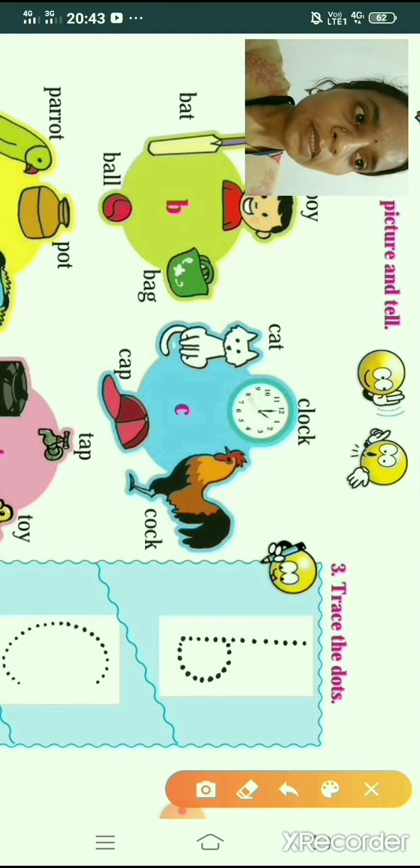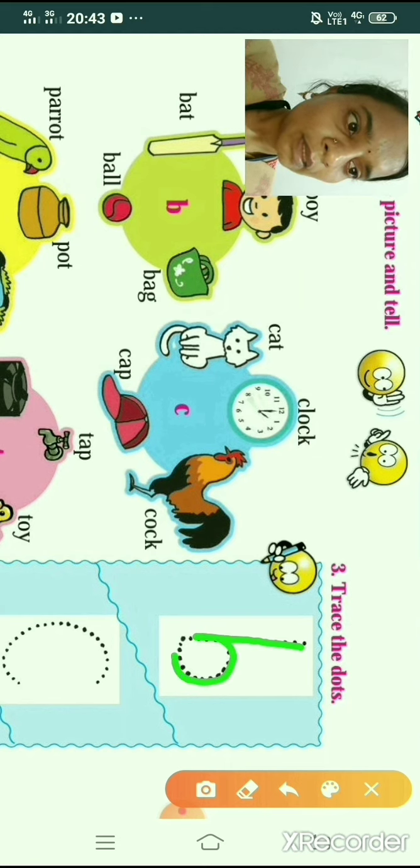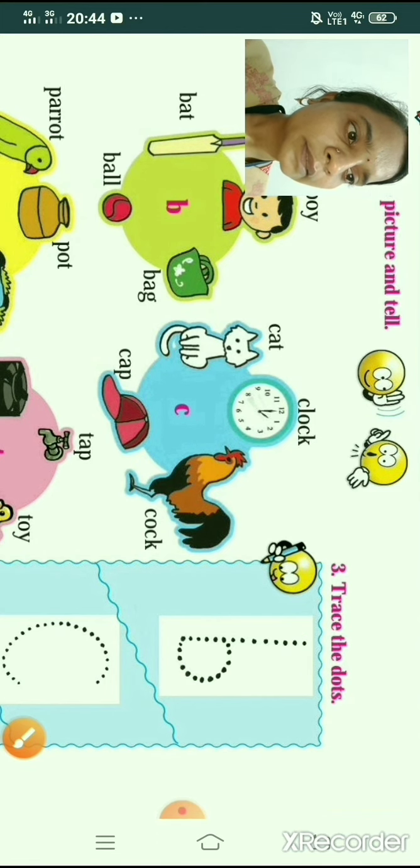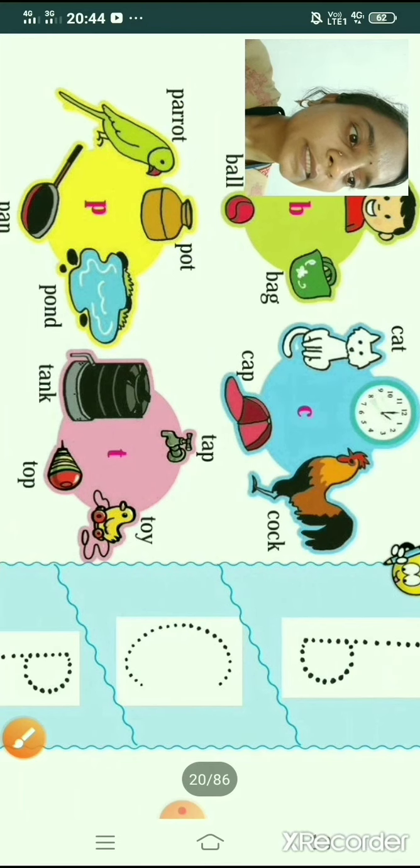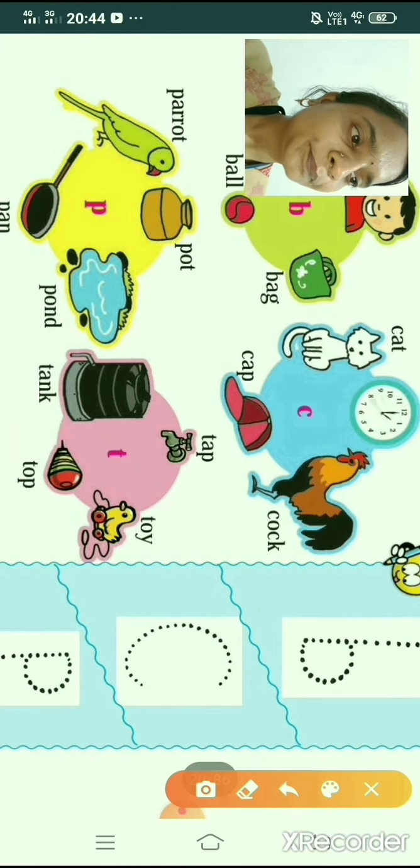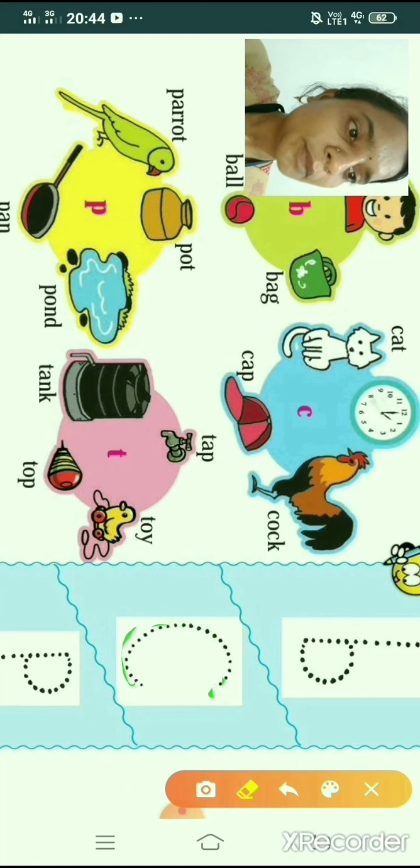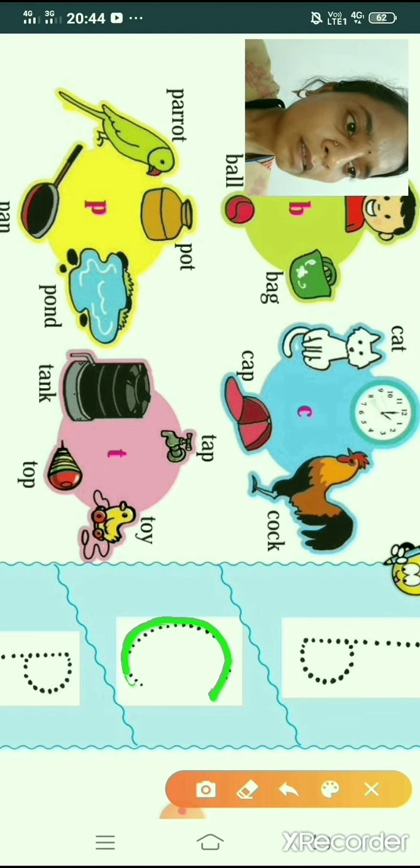So children, see on the screen. This is B, B letter. Then next, See. Next letter is See. Means K sound.